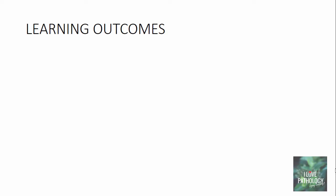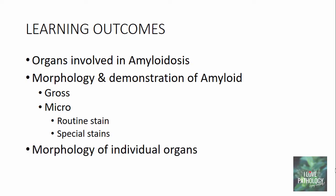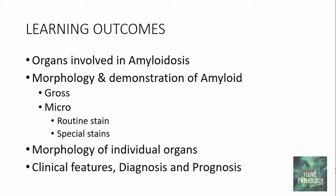The learning outcomes for today's topic are: we will discuss the organs involved in amyloidosis; we will look into the morphology and demonstration of amyloid, particularly the gross and microscopic features; we will discuss the properties of amyloid in routine and special stains; then we will discuss the morphology of individual organs; and finally we will conclude with the clinical features, diagnosis, and prognosis of amyloidosis.